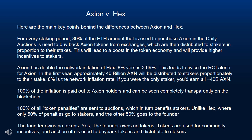This leads to a boost in the token economy and provides higher incentives to stakers. Axion has doubled the network inflation of HEX — 8% vs. 3.69% — which leads to twice the ROI for Axion. In the first year, approximately 40 billion AXN will be distributed to stakers proportionately to their stake; 8% is the network inflation rate. If you were the only staker, you'd earn all 40 billion AXN.